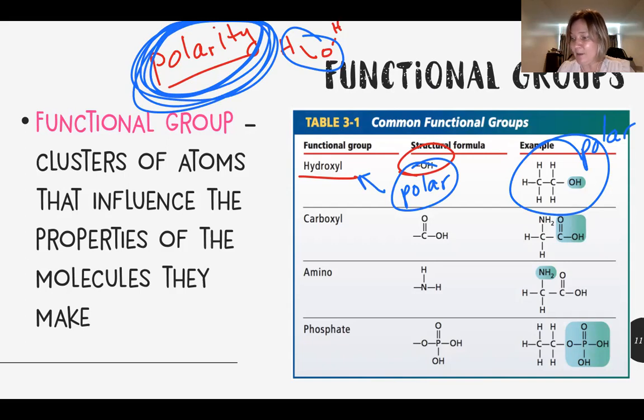Another example of a functional group is carboxyl. This is something else that you'll see commonly in both biology and chemistry. It is a carbon bonded to a hydroxyl group. So this part's polar here, and then double bonded to an oxygen. So you would write this formula COOH. But structurally, it's double bonded to an oxygen with a hydroxyl group on the side.